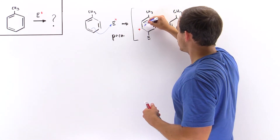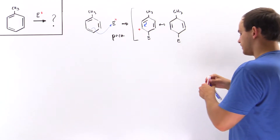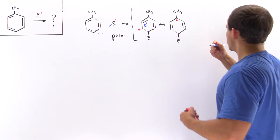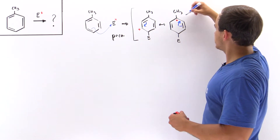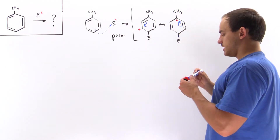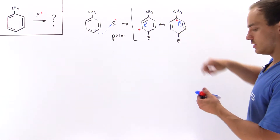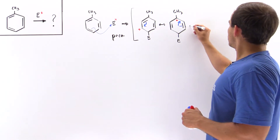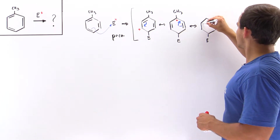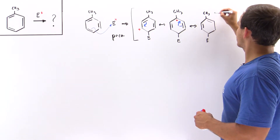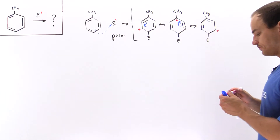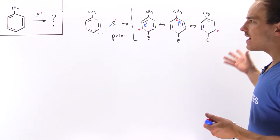We have resonance stabilization where the charge resonates between different positions. If this pi bond goes in here, we form a molecule with the positive charge on that position. In a third structure, these electrons move over here, forming a pi bond, and the positive charge jumps onto the third carbon. So we draw that structure with the positive charge appearing on that carbon. This is the para substitution.